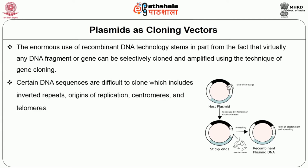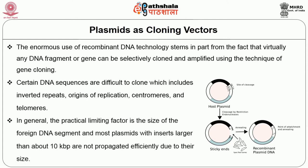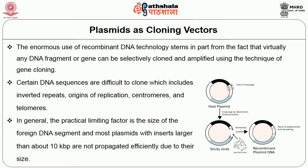Certain DNA sequences are difficult to clone, including inverted repeats, origins of replication, centromeres, and telomeres. In general, the practical limiting factor is the size of the foreign DNA segment — most plasmids with inserts larger than about 10 kb are not propagated efficiently due to their size.